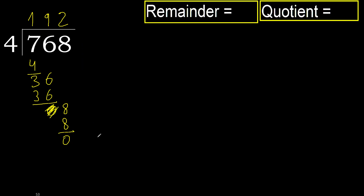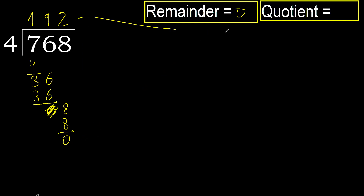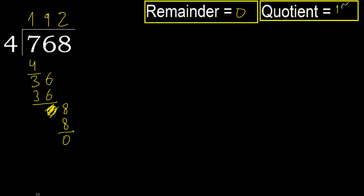That is not a number, therefore we finish it. Ok, 0. Therefore 768 divided by 4 is 192.